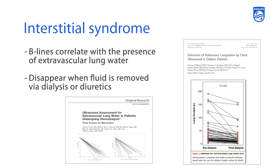There have been a number of studies looking at B-lines and how they correlate to extravascular lung water to help delineate pulmonary edema with lung ultrasound. What we found is that as patients who receive dialysis complete their dialysis run or receive their diuretics, the amount or severity of B-lines seen in their pre-dialysis or pre-diuretic time period tend to disappear as water is removed.